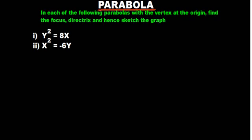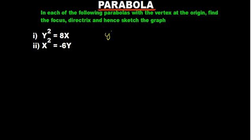Starting with the first one, we have y² = 8x. This is symmetric about the x-axis. Hence the coordinates of the focus are going to be h plus p, comma k.